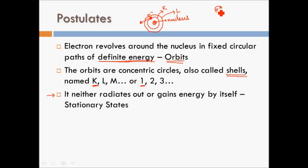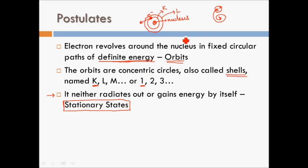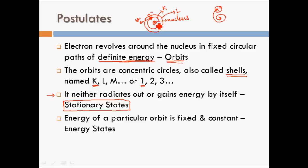Rutherford could not explain why the electron would not lose energy and crash into the nucleus in a spiral. Bohr said these orbits are stationary states — also called stationary orbits — meaning the energy is constant. As long as the electron is traveling in the orbit with velocity V, it cannot lose or gain energy.